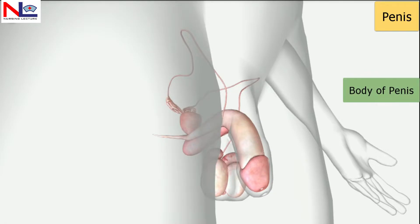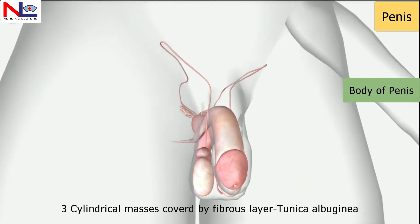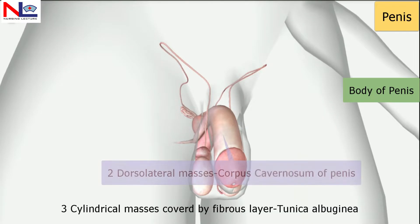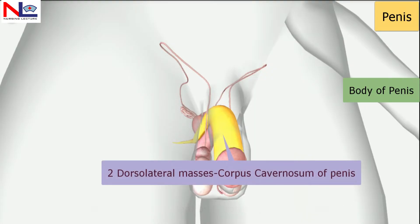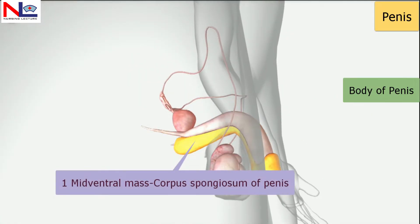The body of the penis is composed of three cylindrical masses of tissue, all covered by a fibrous layer called the tunica albuginea. The two dorsolateral masses are called the corpus cavernosum of the penis, and the one mid-ventral mass is the corpus spongiosum of the penis.